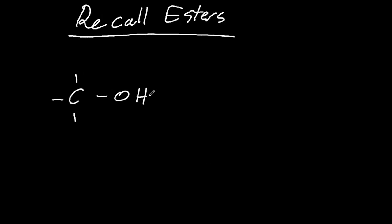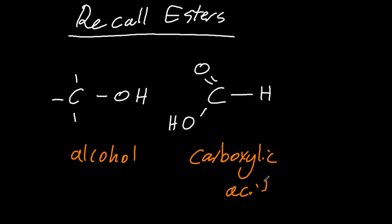You can make an ester by reacting an alcohol with a carboxylic acid and water will pop off from between them just like so and the bond will join over that gap there.